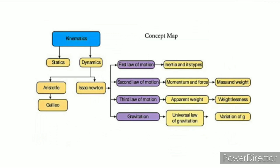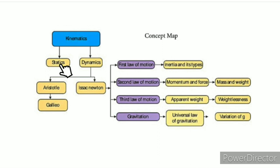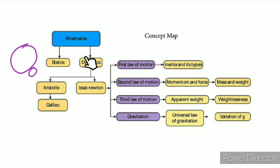Classical mechanics and quantum mechanics. Within classical mechanics, one branch is statics and the other is dynamics. Statics deals with bodies at rest, while dynamics deals with forces that cause motion — the moment something moves, that is dynamics.